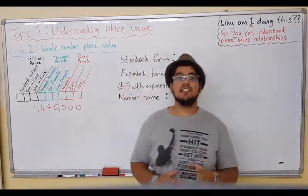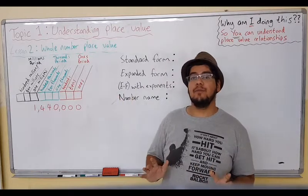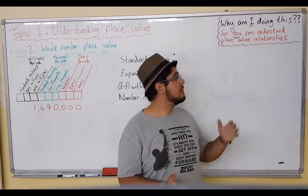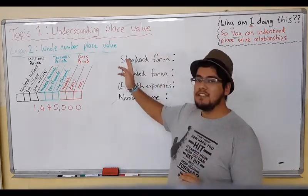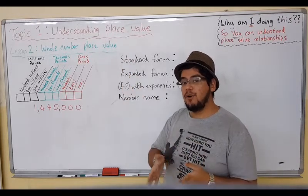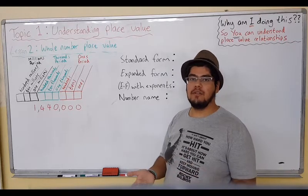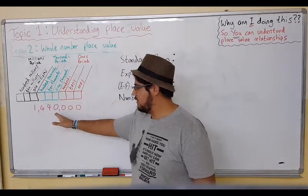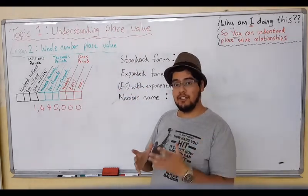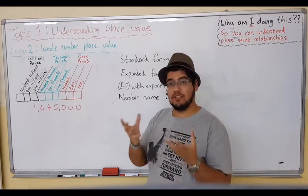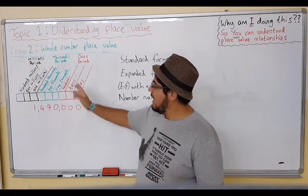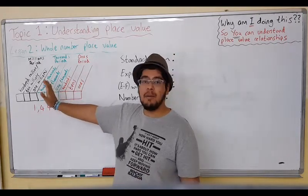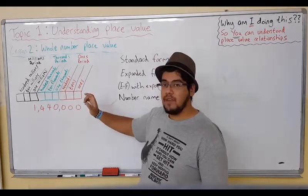Hi guys, so today in lesson two we're talking about place value. In simple terms, what you're going to understand from this lesson is that place value is just knowing the value of a digit within a number. For example, take this number here: 1,440,000. Individually each digit has its own value, but when we put them together it makes a whole number. This is where the chart comes in — it's called a place value chart and it's color coded.